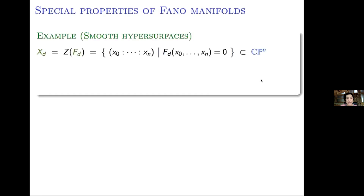What are the special properties of Fano manifolds? Let me describe the case for smooth hypersurfaces, where we already see some fundamental properties of Fano varieties in a very clear way. Smooth hypersurfaces are the simplest projective varieties we study in algebraic geometry. They can be defined by a single polynomial equation of degree d, so basically all the geometric information is encoded in this polynomial.